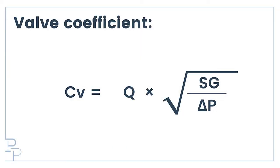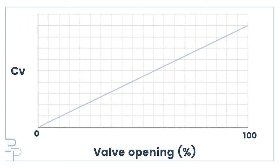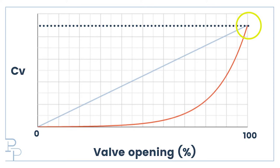Valve size is defined by a number called the valve coefficient or valve CV. The bigger the valve, the higher the CV. The higher the CV, the less pressure drop I will have because it is easier to get more flow through a bigger valve. When we describe a valve in terms of its CV, we usually refer to the CV when it is 100% open, but two valves can have identical CVs when they are fully open but behave completely differently as they open up from 0% to 100%.